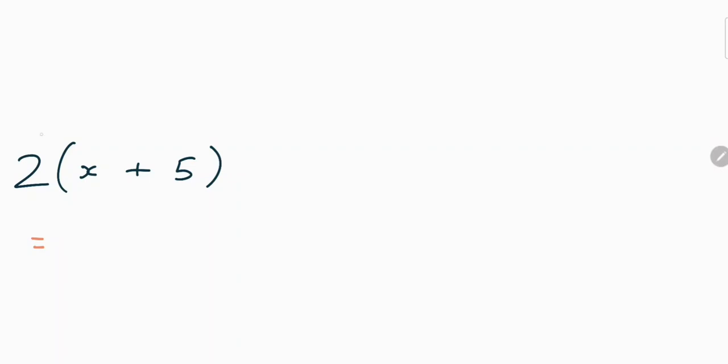The first thing you do is you do 2 times the x. Now, whenever you have a number like this and a letter, this becomes 2x. The next step you do is you do 2 times 5, which is 10. So the first answer to the first question is 2x plus 10.